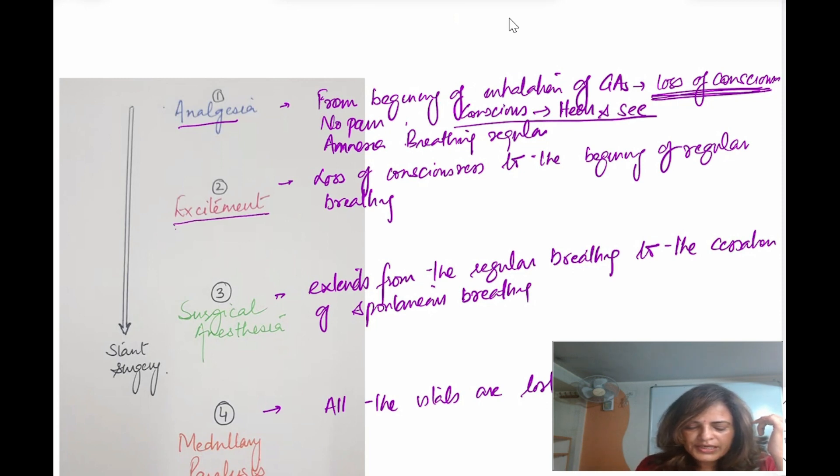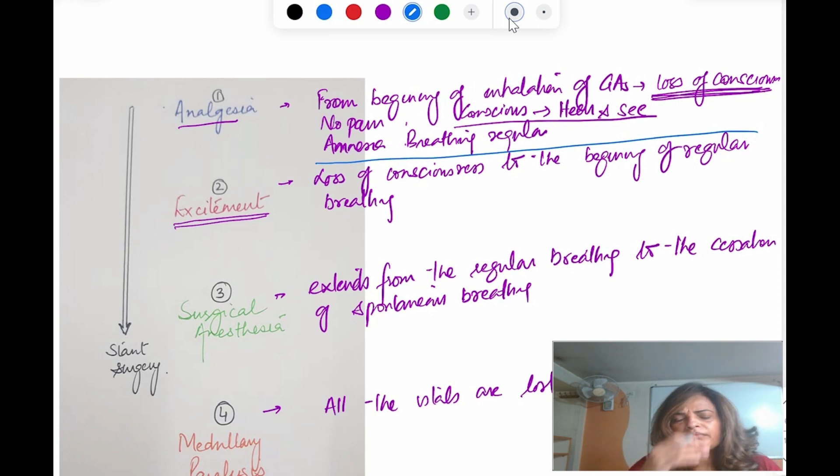Now, stage of excitement or delirium, this is from the loss of consciousness to the beginning of regular breathing. Here you have delirium and excitement. Muscle tone is going to increase. Patient may shout. Breathing will be jerky. Blood pressure will be high. Heart rate will also be high. Patient may shout, patient may struggle. In this phase, that is why it is called stage of excitement or stage of delirium.